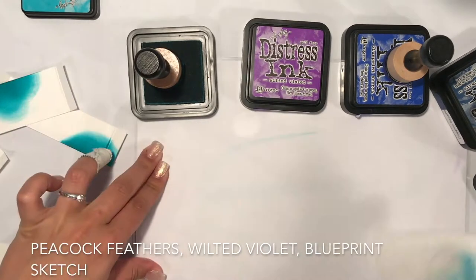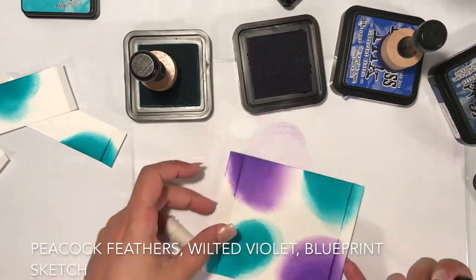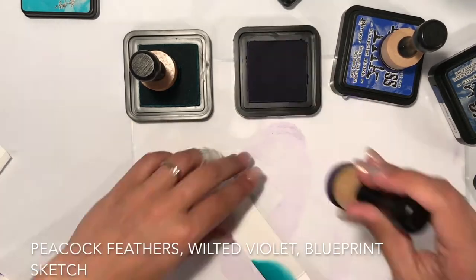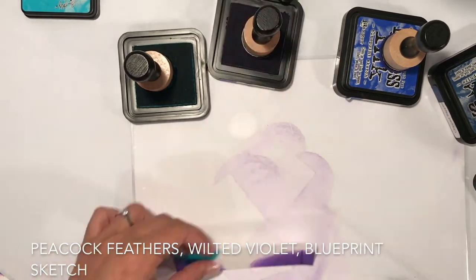Now I need a galaxy background for all my pieces for the box and I'm using Peacock Feathers, Wilted Violet, Blueprint Sketch, and Dusty Concord to create my background.